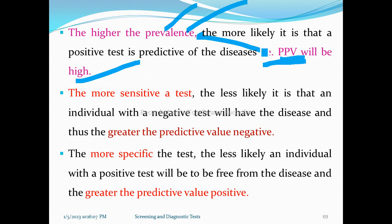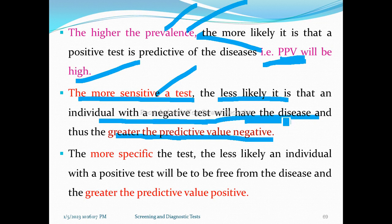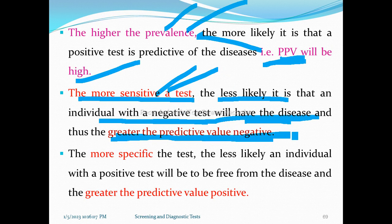The more sensitive the test, the less likely it is that an individual with a negative test result will have the disease. There is a greater predictive value of negative. The more sensitive the test, the higher the negative predictive value.